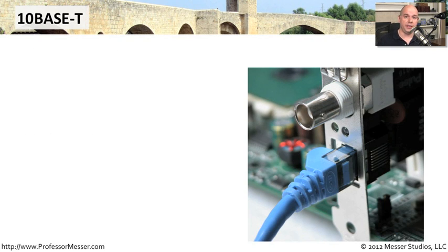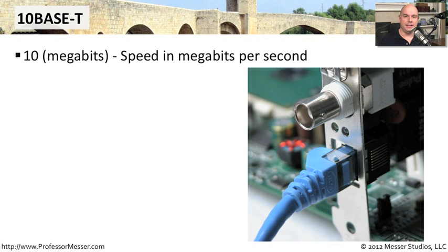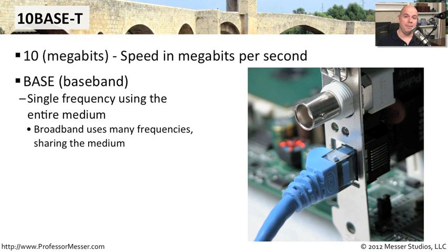One of the earlier twisted-pair standards of Ethernet was 10BaseT. The 10 obviously stood for the speed in megabits per second that you could send through the Ethernet connection. The 'base' stands for baseband, meaning there is a single frequency being used over those cables to send data from one side to the other. You may have heard about broadband — broadband means there are many frequencies being used across that single connection, and it refers to how many different frequencies are being used inside of that cable.